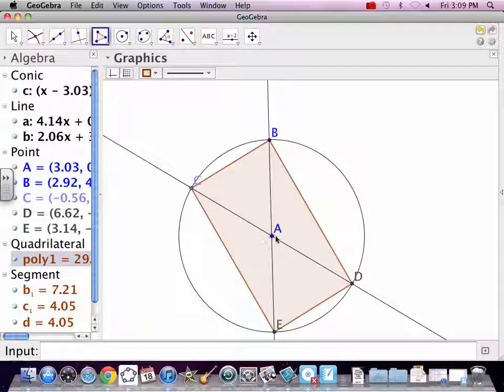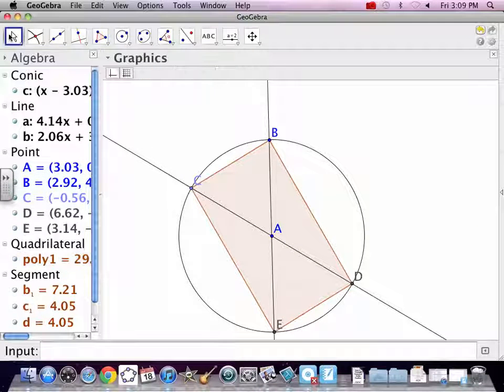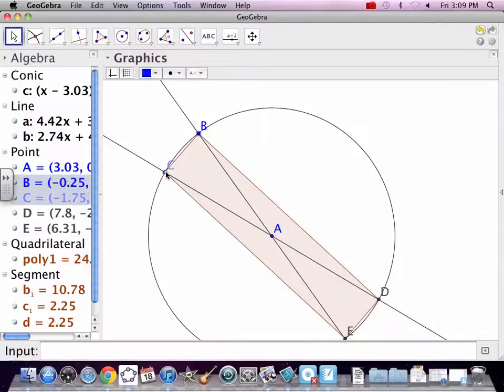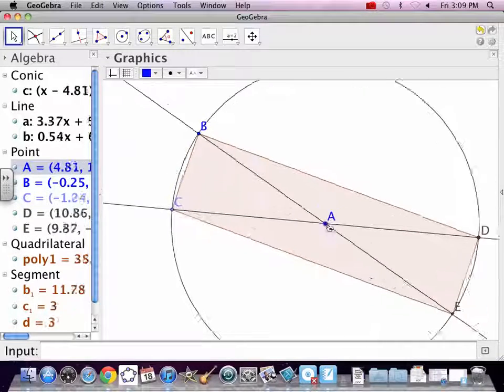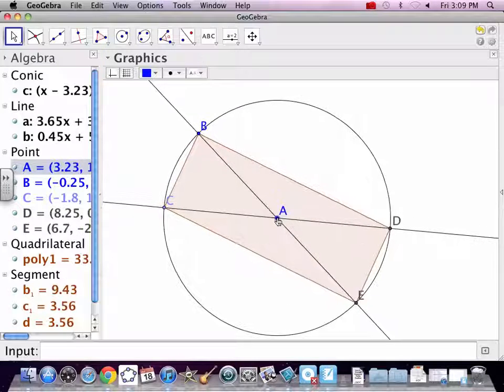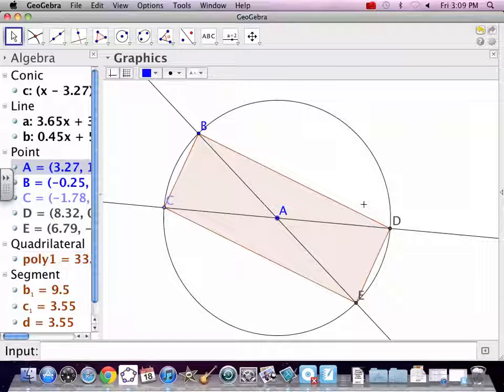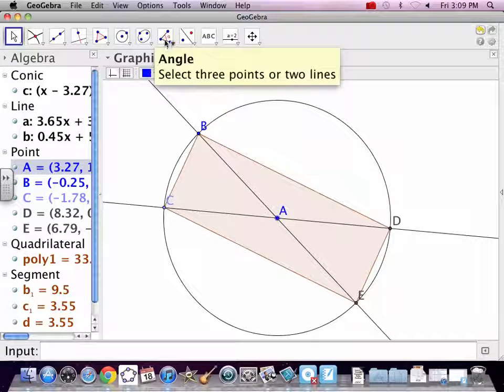Again, you know, they're meeting in the middle kind of thing. And they're also congruent because the diagonals are actually diameters. That is a rectangle. You don't believe me? Well, that means you measure the angles, right?